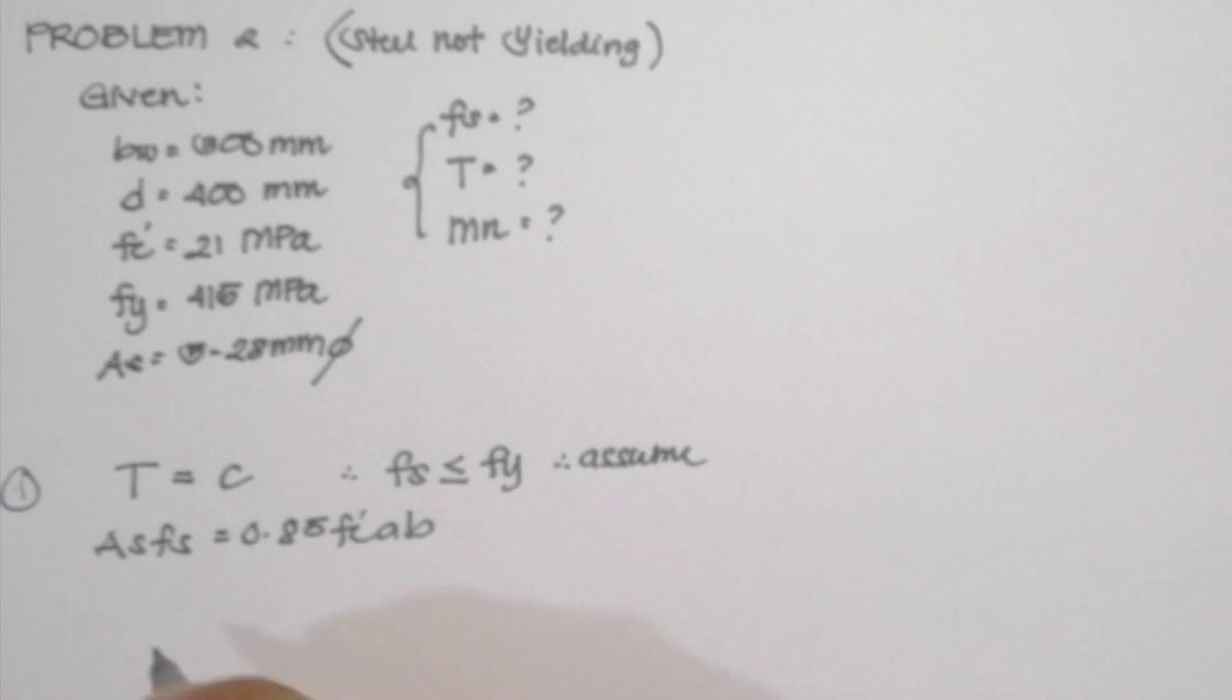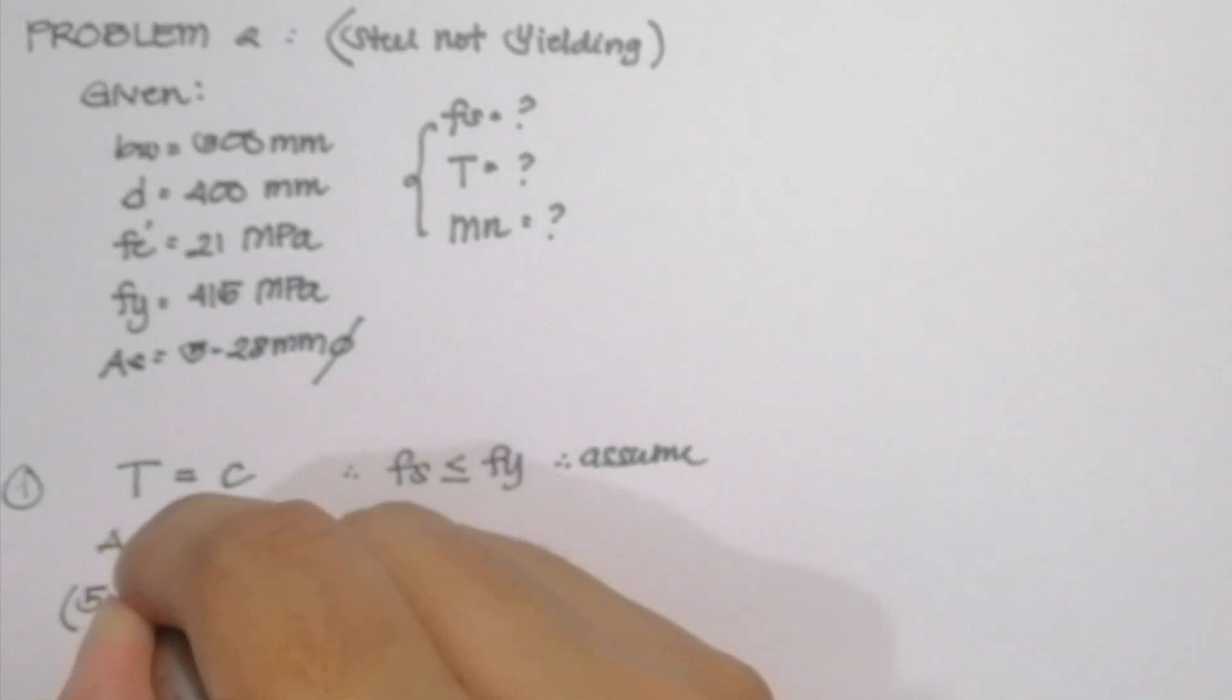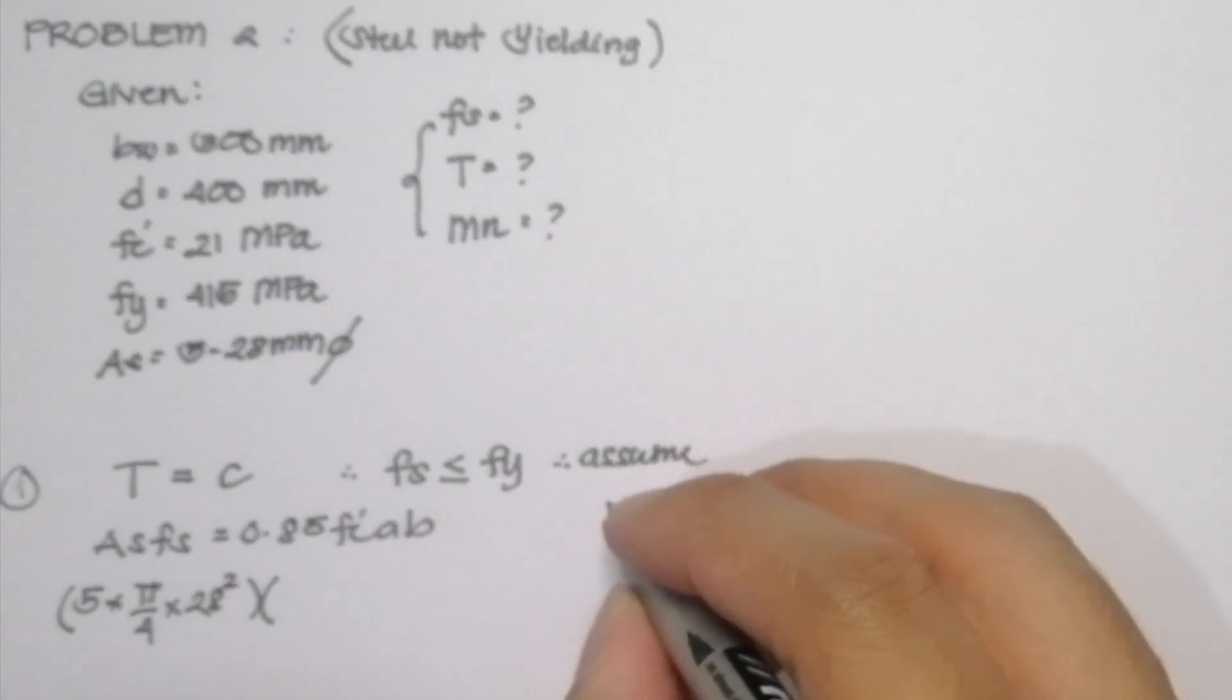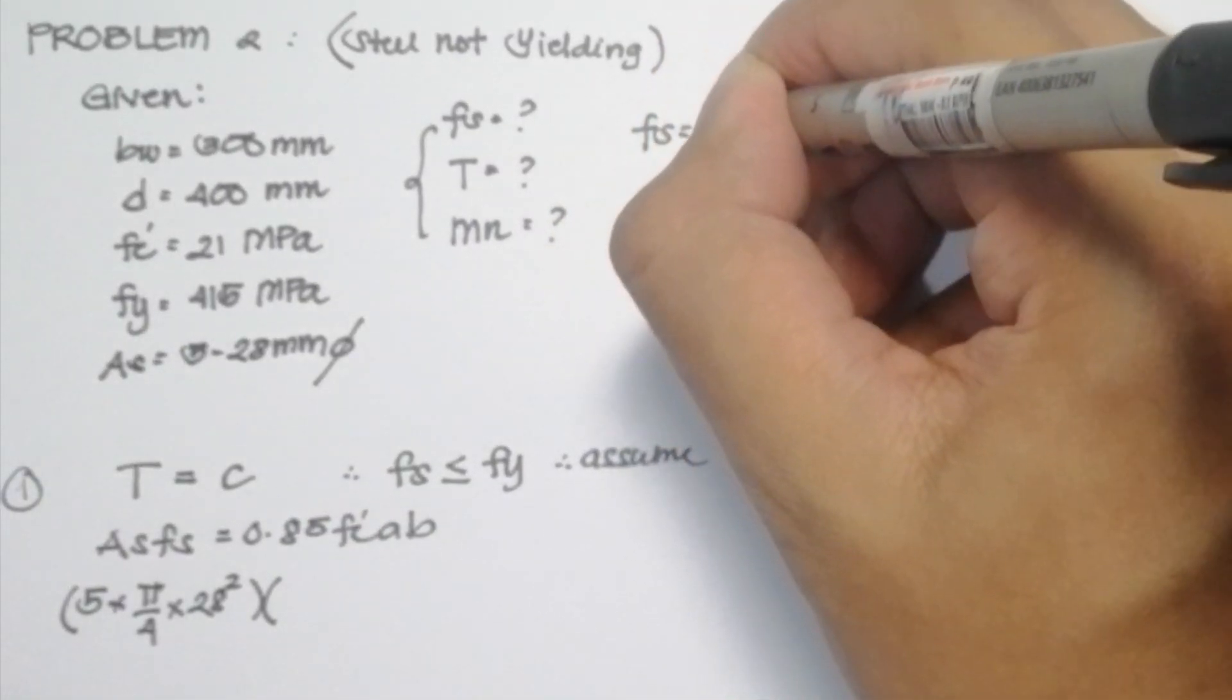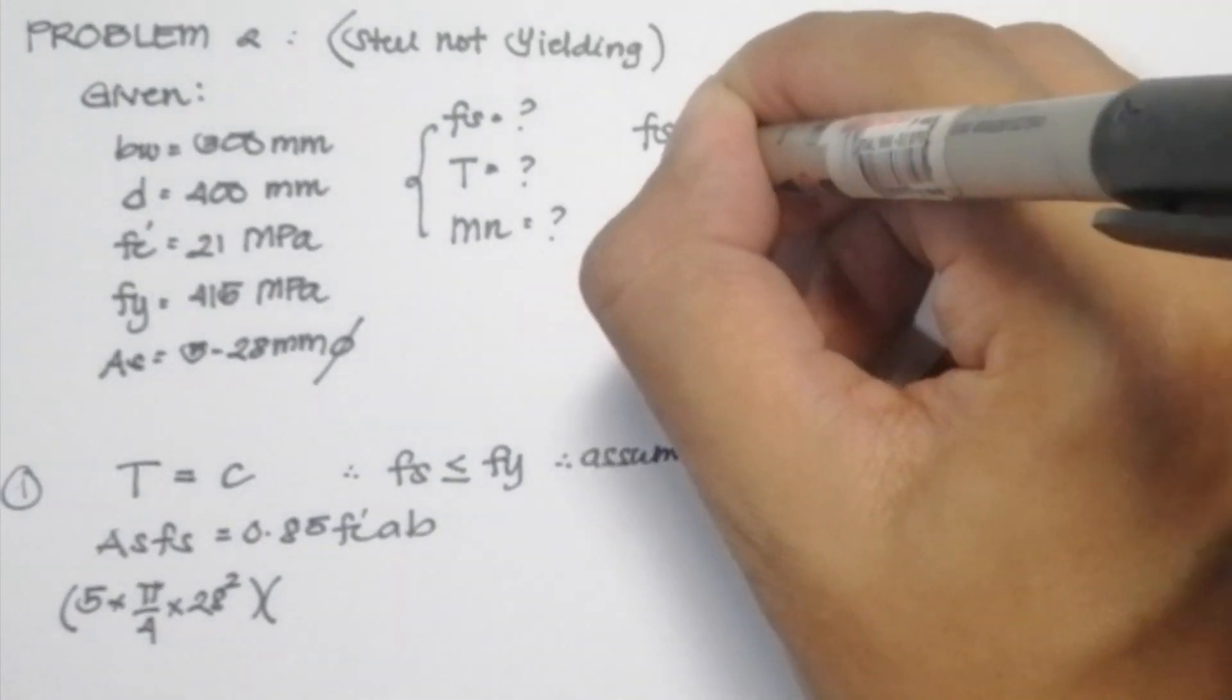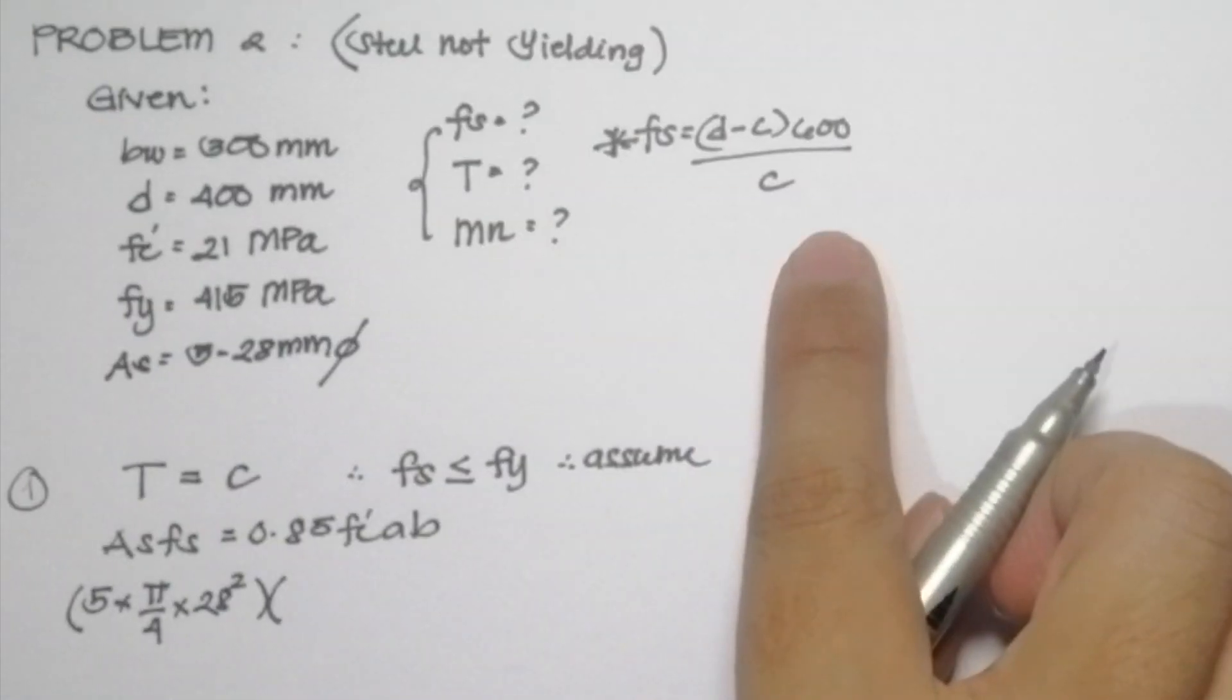So our As·Fs is equal to 5-28mm diameter bars. And for our Fs, recall that our Fs is equal to (D minus C) times 600 all over C. So this formula, we can use it in our working equation.